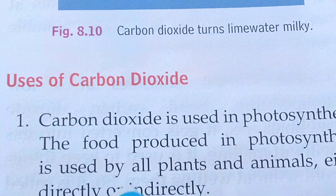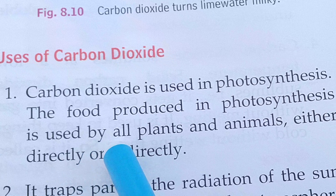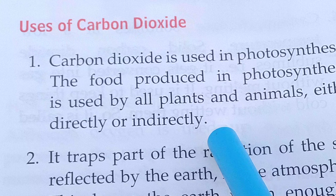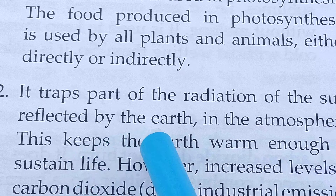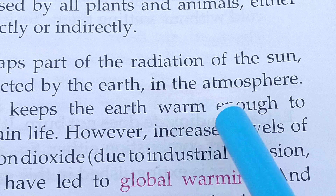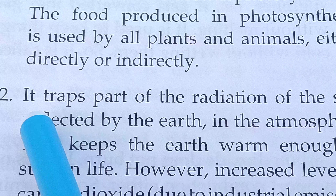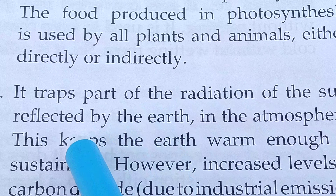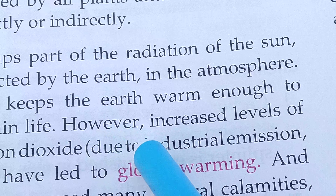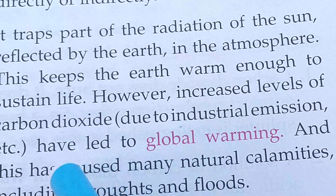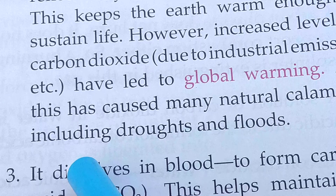Uses of carbon dioxide: Carbon dioxide is used in photosynthesis. The food produced in photosynthesis is used by all plants and animals, either directly or indirectly. It traps part of the radiation of the sun reflected by the earth in the atmosphere, which keeps the earth warm enough to sustain life. However, increased levels of carbon dioxide have led to global warming, causing many natural calamities including droughts and floods.